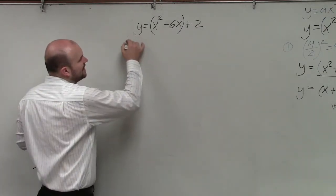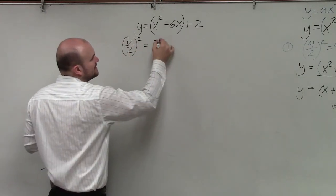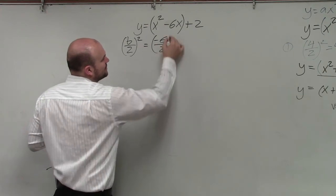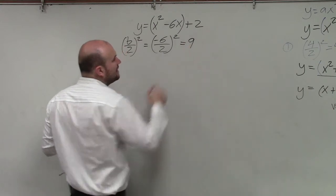Because once I have my first two terms, I can create a perfect square trinomial from those terms. And to do that, you just take b divided by 2 and square it. So in this case, that's negative 6 divided by 2 squared. Well, negative 6 divided by 2 is negative 3. Negative 3 squared equals 9.